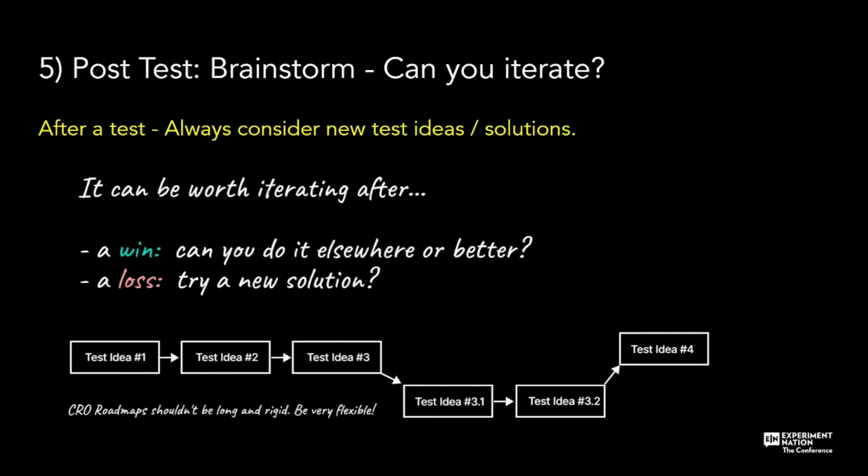On the flip side, if the test lost, perhaps it was the solution — perhaps it sucked. Should we try a different solution that's still familiar to the audience? I like this because it means we have to be willing for our CRO roadmaps to be flexible. They don't have to be super planned for six or 12 months. You just have to roll with the flow a bit and be willing to move a new test in when needed.